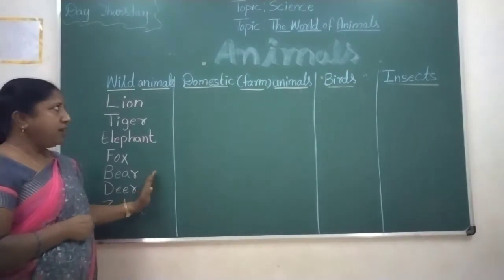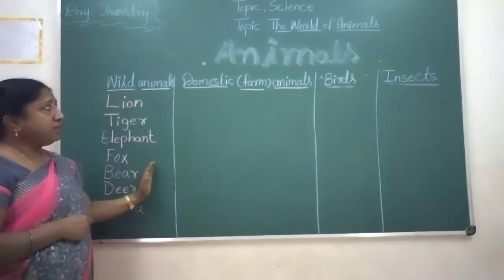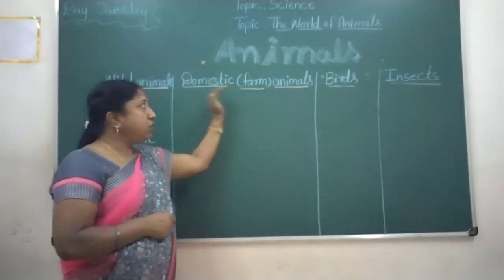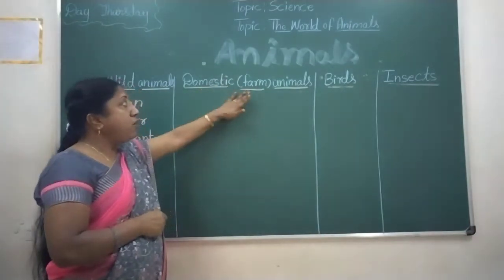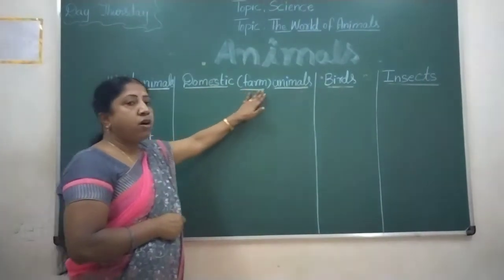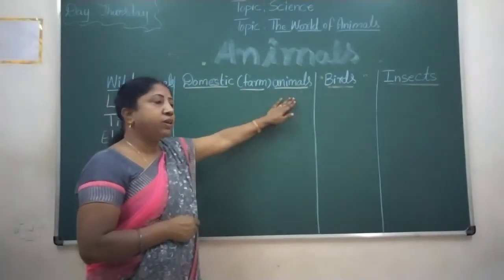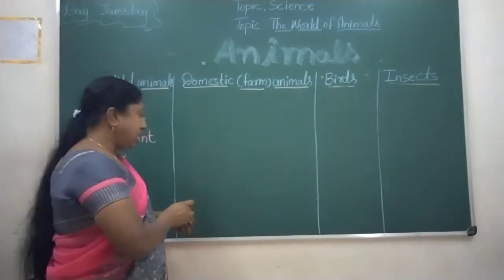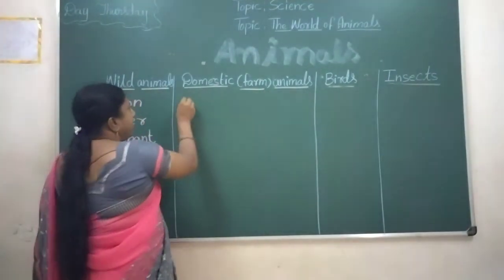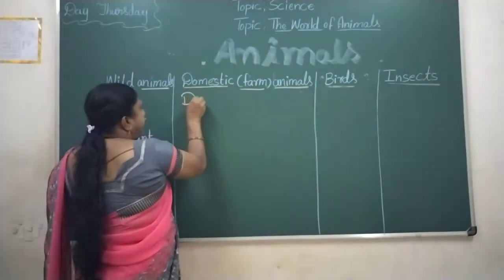Which is the next step? Domestic animals — these are farm animals, okay? See.